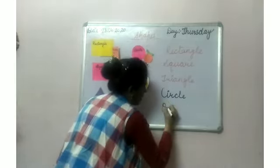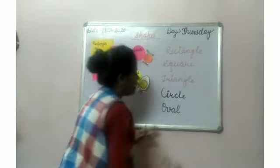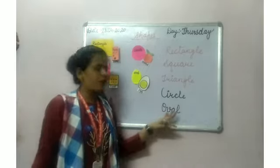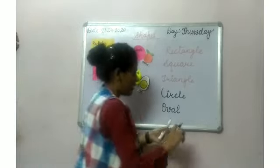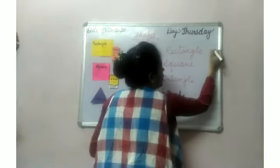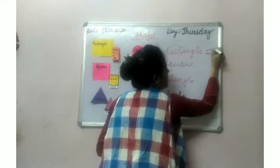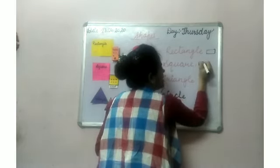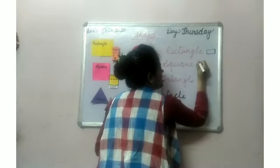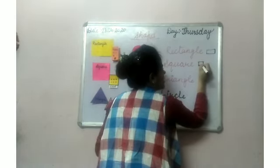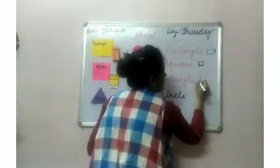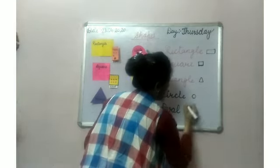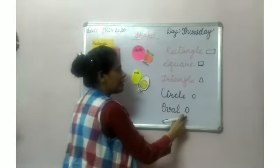Next is our oval. Repeat with me: O-V-A-L. I want to draw the pictures also. This is rectangle, this is square, and this is triangle. This is circle. And this is oval.